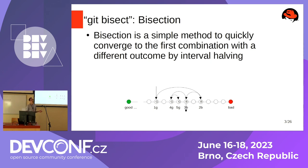Bisection uses interval halving to quickly find where things changed. In Git terminology, you have a good commit and a bad commit and you want to quickly find out which commit in between caused the issue. You start in the middle — if the result matches the good side you jump right, if it matches the bad side you jump left — until you find two commits apart where one is good and one is bad, and return the first bad commit. Note: bad just means it has the same output as the bad reference.